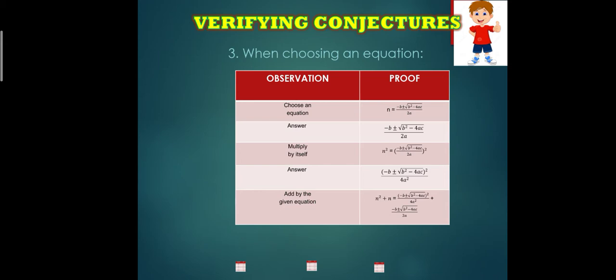Multiply it by itself. So the answer will be negative B, positive and negative square root of B squared minus 4AC squared all over 4A squared.